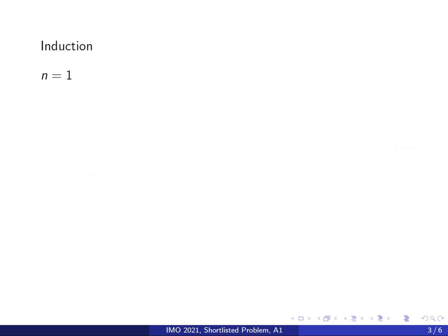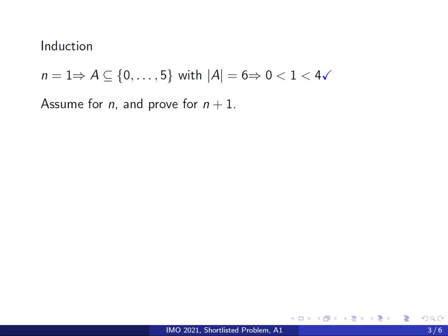Let's get started with the induction. For N equals 1, the problem is obvious because it's a subset of 0 through 5 with 6 elements, and 0, 1, 4 is an example that works. For the inductive step, assume the statement is true for N and we want to prove it for N plus 1. We have 4N plus 6 integers between 0 and 5 to the power of N plus 1. If x sub (4N+2) minus x sub 1 is less than or equal to 5 to the power of N, we can apply the inductive hypothesis and we are done.